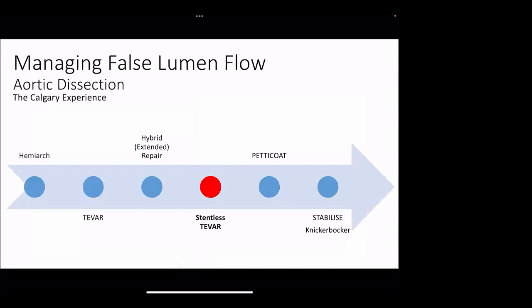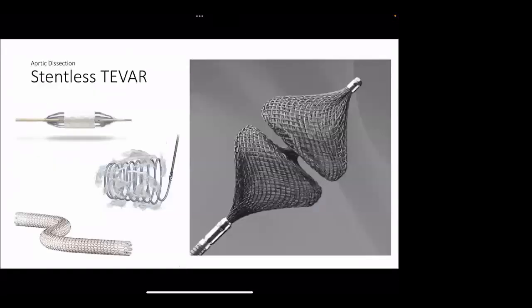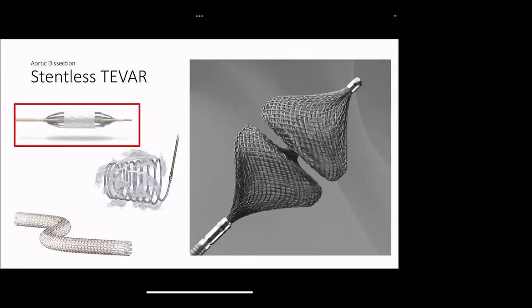The next concept is stentless TVAR — I never liked this term but it's caught in the literature. This is about fixing false lumen flow patterns without using a large-caliber aortic stent. We use a variety of tools: a vascular plug, a balloon-expandable stent graft, a self-expanding stent graft, and coils — using these in various ways to try to control flow patterns.